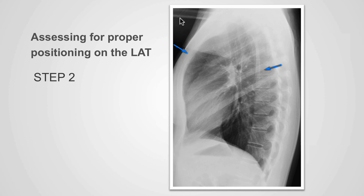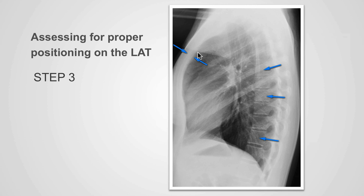In the next step, we identify the sternum anteriorly and the vertebral bodies posteriorly. The patient is positioned properly when we can identify the anterior and posterior cortex of the sternum clearly and we can identify the vertebral bodies clearly posteriorly.